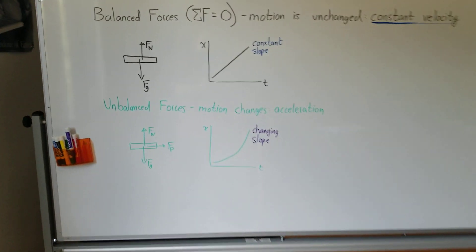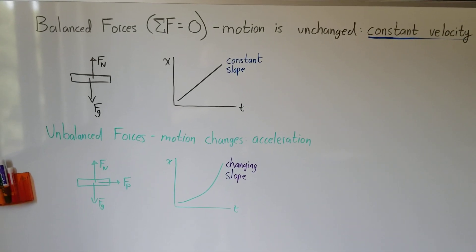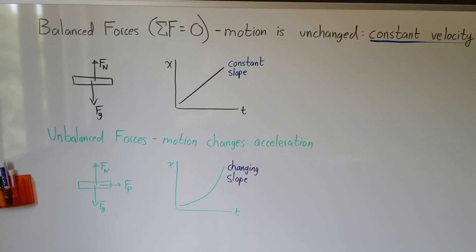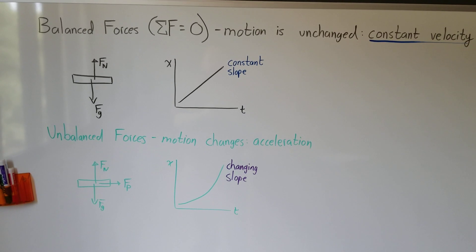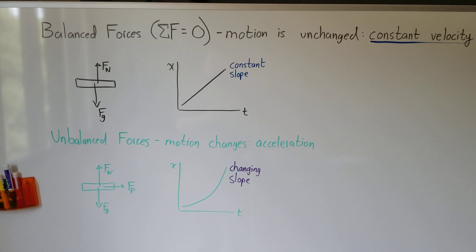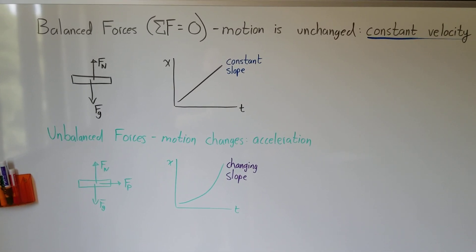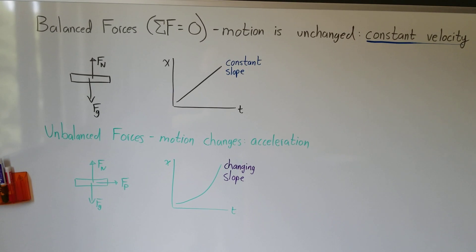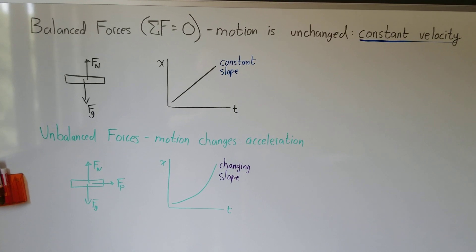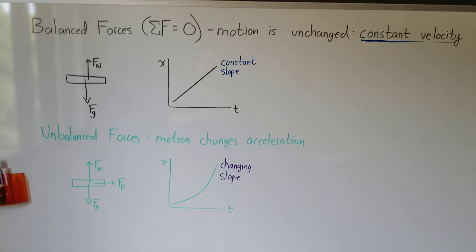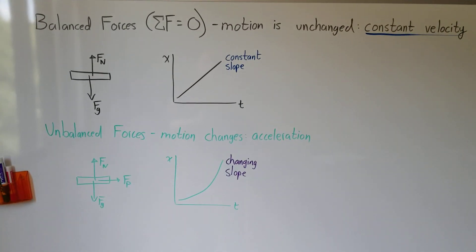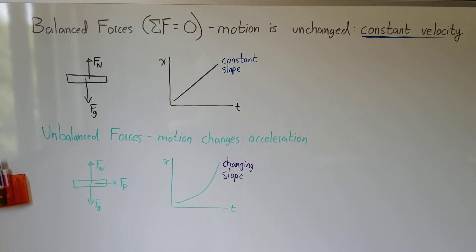So here's our summary. If the forces on something are balanced — as in the first demo where gravity goes down and the normal force holds it up — you get constant velocity, and on a position versus time graph that looks like a constant slope. If the forces are unbalanced, like a force pushing to the right, then you're going to get a changing slope. For right now we're only focused on the first situation — balanced forces — but I do want you to be aware of the second one. We'll study that in more detail later.